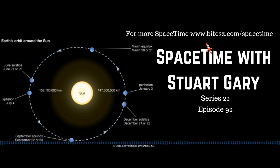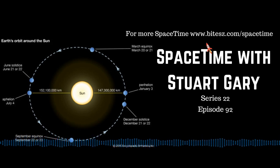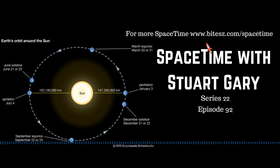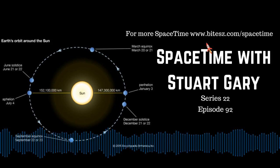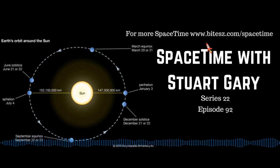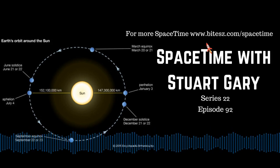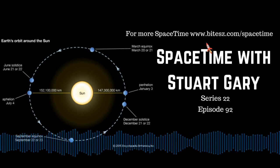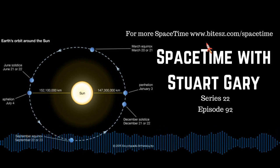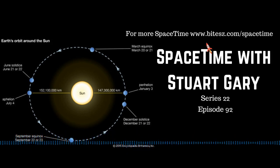And time now to turn our eyes to the skies with December Skywatch. December is the 12th and final month of the year in both the Julian and Gregorian calendars. December got its name from the Latin word decim, meaning 10, because it was originally the 10th month of the year in the old Roman calendar, which began in March.